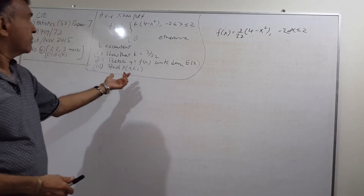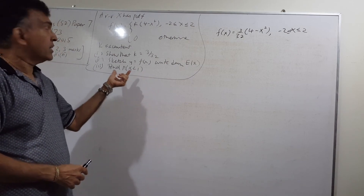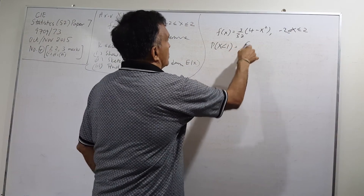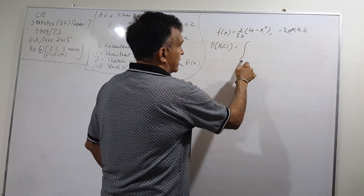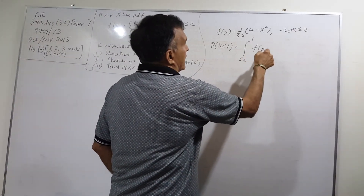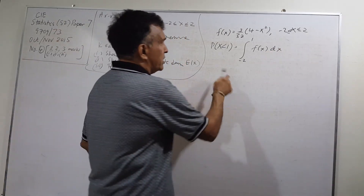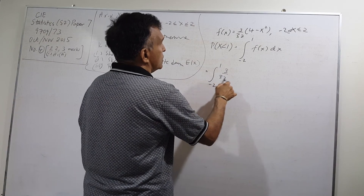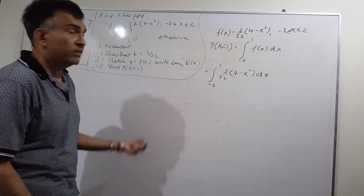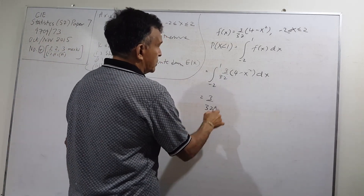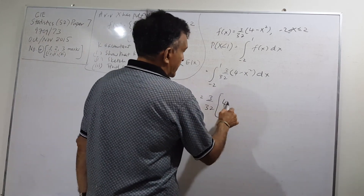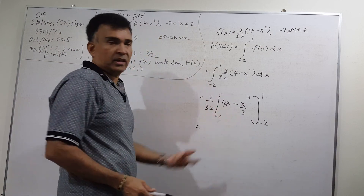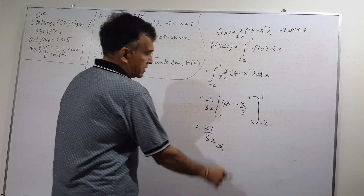For the final part, we find the probability that X is less than 1. This equals the integral from negative 2 to 1 of f(x) dx, which is the integral from negative 2 to 1 of (3/32)(4 minus x squared) dx. Integrating gives (3/32) times [4x minus x cubed over 3] evaluated from negative 2 to 1. The final answer is 27/32.